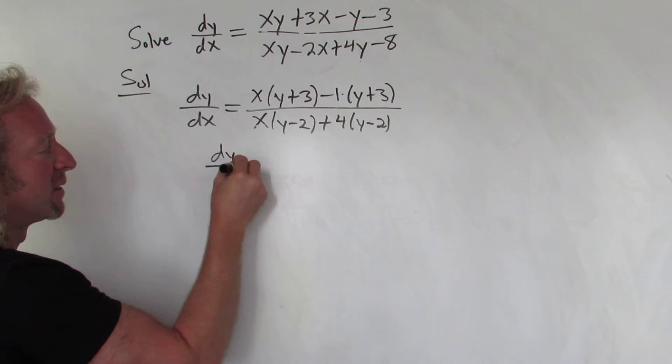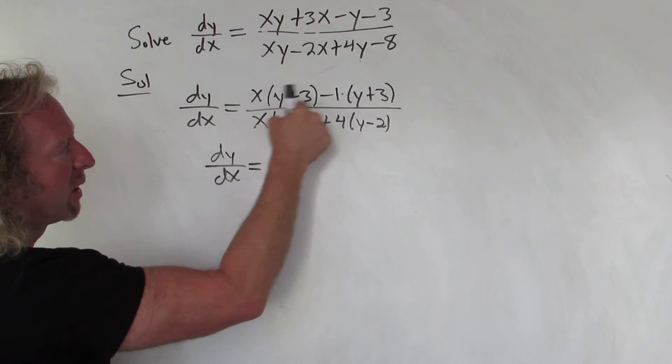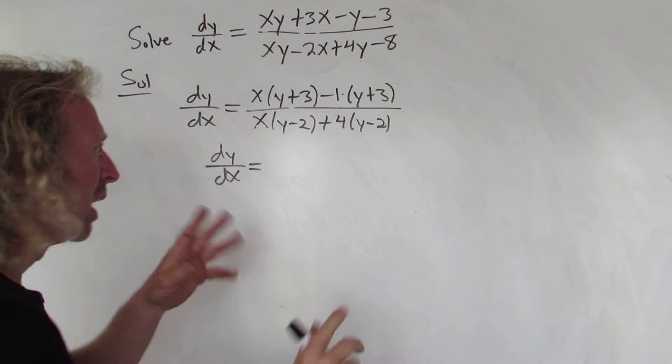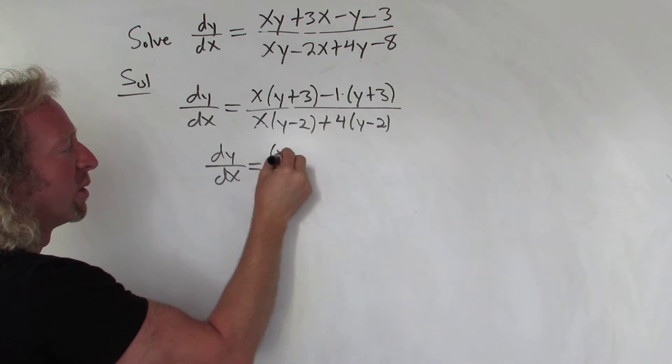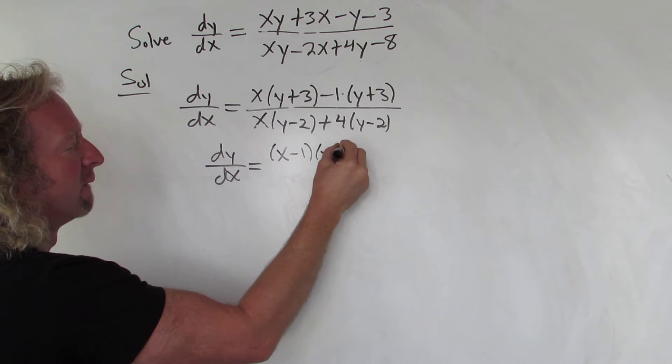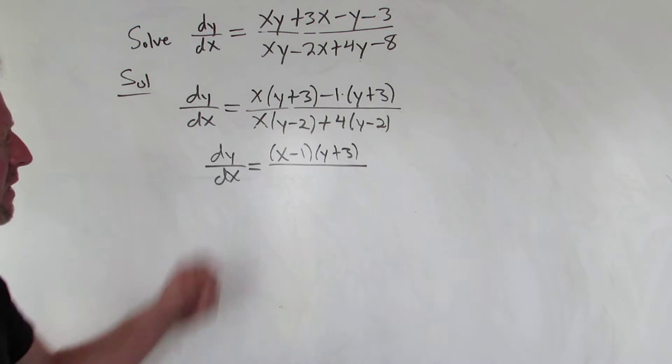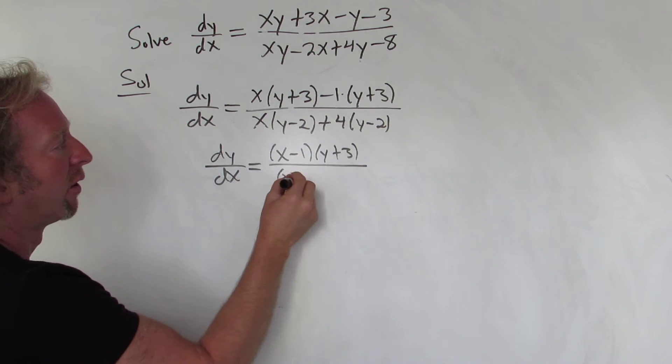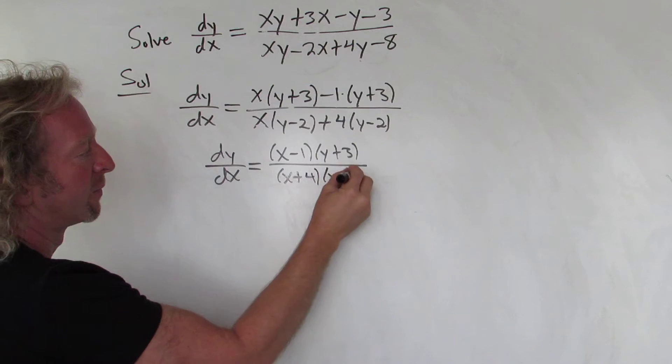So we have dy/dx equals, you can pull out (y+3) and put it in the front or back. I'll leave it in the back. This is (x-1)(y+3). And then here it's (x+4)(y-2).